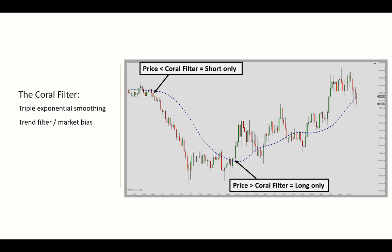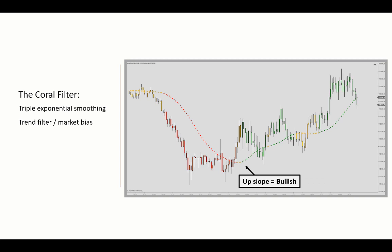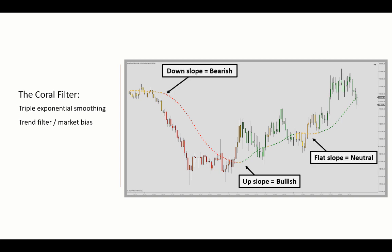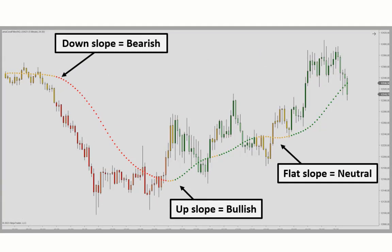This basic approach can be further refined by a normalized slope. You would then determine the trend bias based on the slope itself. If sloping upwards, it's long only. A downward slope will only allow you to consider short setups. And if it's flat, both long and short scenarios can be considered. The indicator comes with a paint bar indication reflecting the color of the normalized slope — green for uptrends and red for downtrends, and yellow for the neutral trend scenarios.